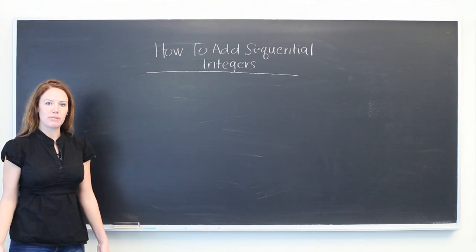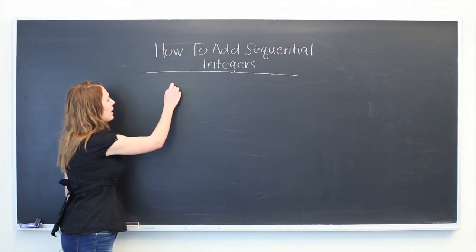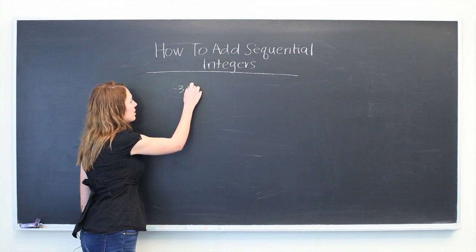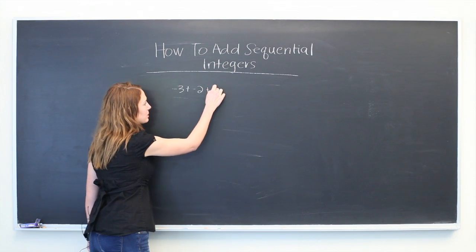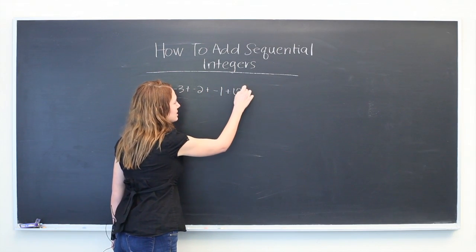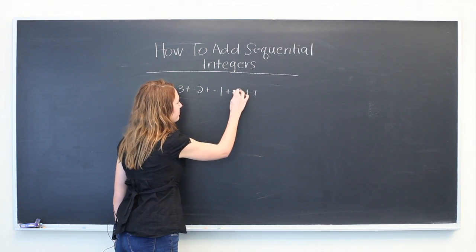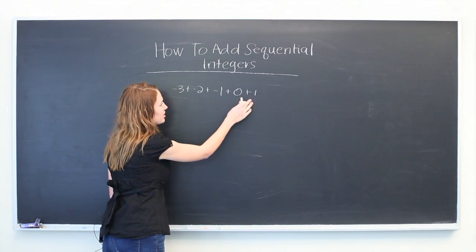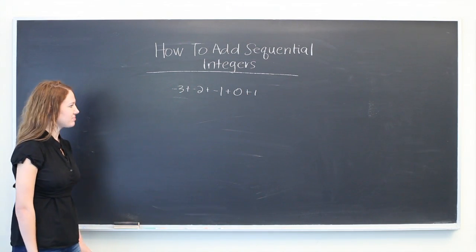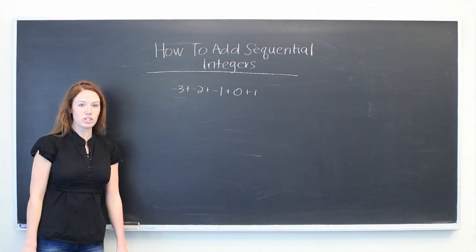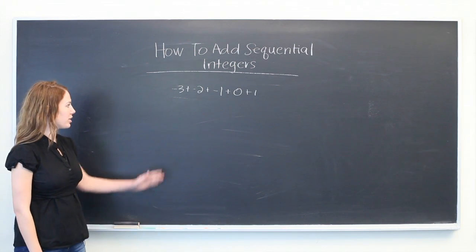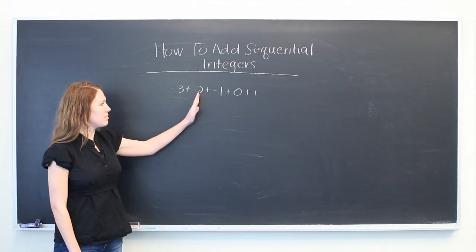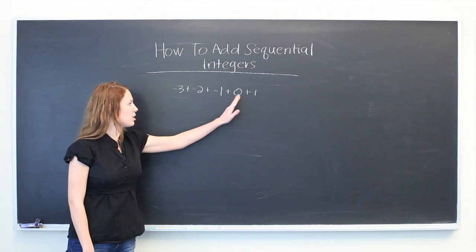So let's start with a basic one where we have -3 + -2 + -1 + 0 + 1. So here we have five different integers and they're sequential, meaning that they go in order: -3, -2, -1, 0, and 1.